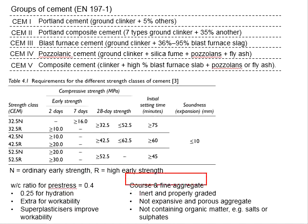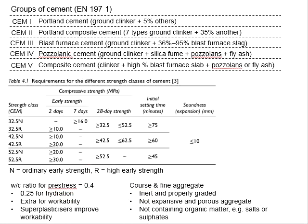For the coarse and fine aggregates, they need to be inert and properly graded. Inert means they are not chemically reactive and should not disturb the hydration process between the cement and water. Properly graded means the size of the aggregate needs to demonstrate an adequate distribution of different sizes within an acceptable range, so that adequate bonding between the cement matrix and aggregate can be ensured.